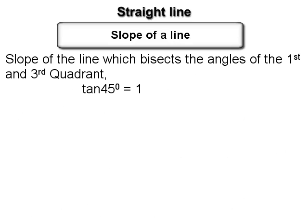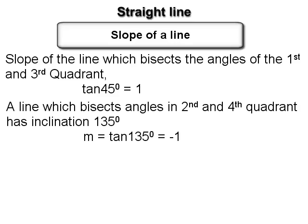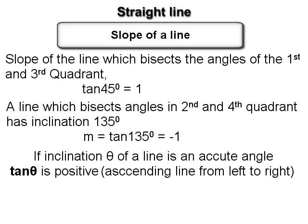The slope of the line which bisects the angles of the first and third quadrants is tan 45° = 1. A line which bisects the angles of the second and fourth quadrants has inclination 135°, so its slope is tan 135° = −1. If the inclination θ of a line is an acute angle, then its slope (tan θ) is positive, and such a line is ascending from left to right.